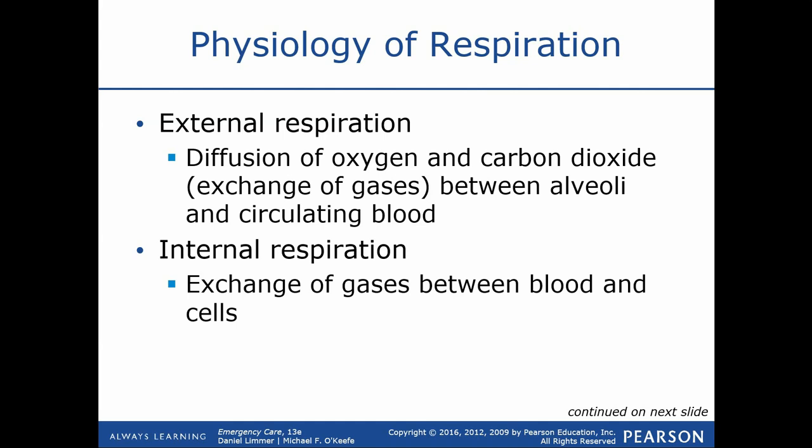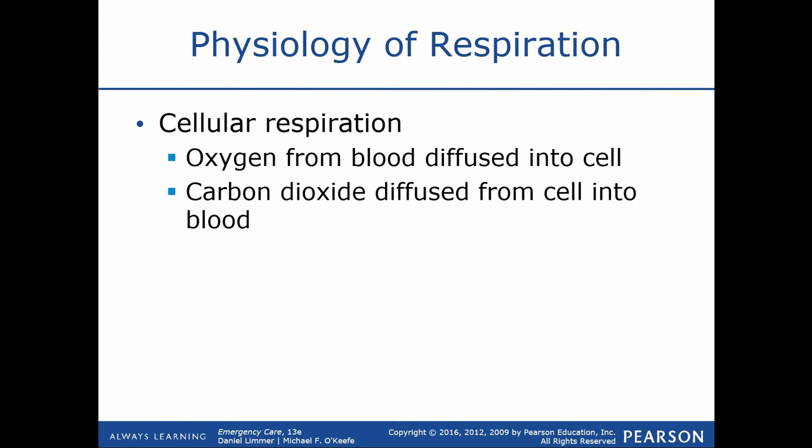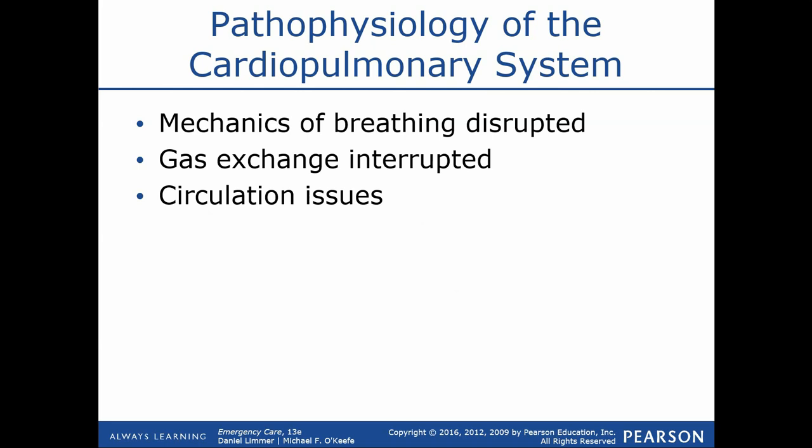External respiration is easier to evaluate — whether the patient is moving air, breathing at an appropriate rate and volume. Internal respiration is harder to determine, so we look at clues like mental status, skin parameters, and vital signs. Cellular respiration is the exchange of gases at the cellular level, which is necessary for aerobic metabolism. Without oxygen, the body switches to anaerobic metabolism, which produces a lot of acid and waste products and is very inefficient, producing very little energy.